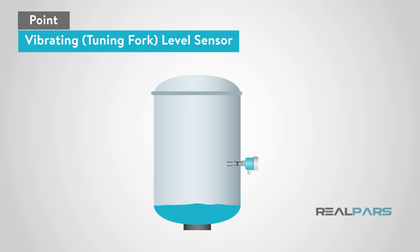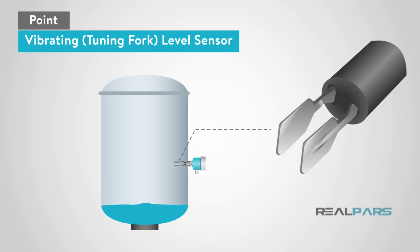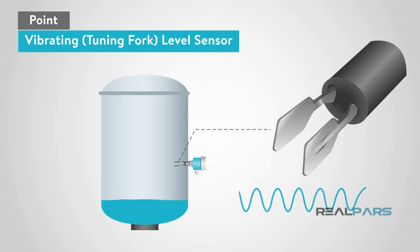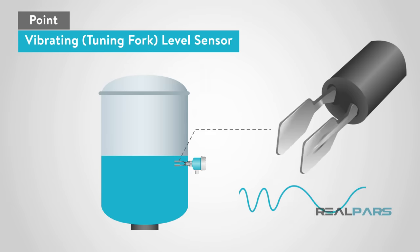Vibrating or tuning forks is another type of point level sensor. They use a fork-shaped sensing element with two tines. The fork vibrates at its natural resonant frequency. As the level changes, the frequency of the fork will change, detecting the level.